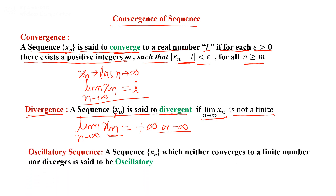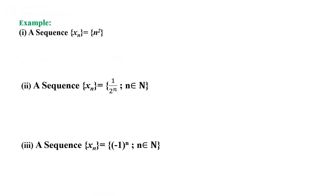An oscillatory sequence is one which neither converges to a finite number nor diverges. That type of sequence is called an oscillatory sequence. Now let us take three examples.